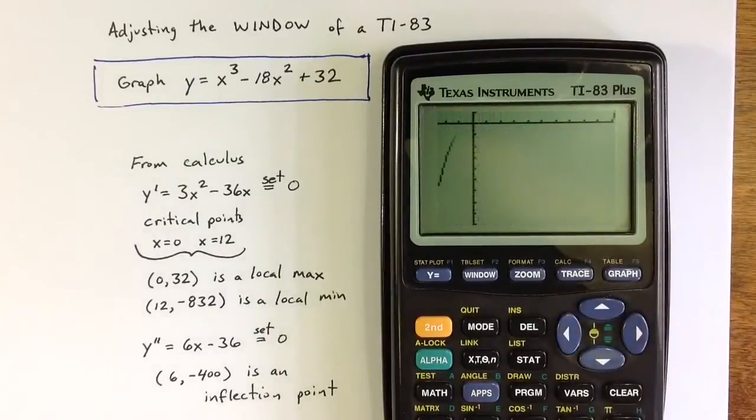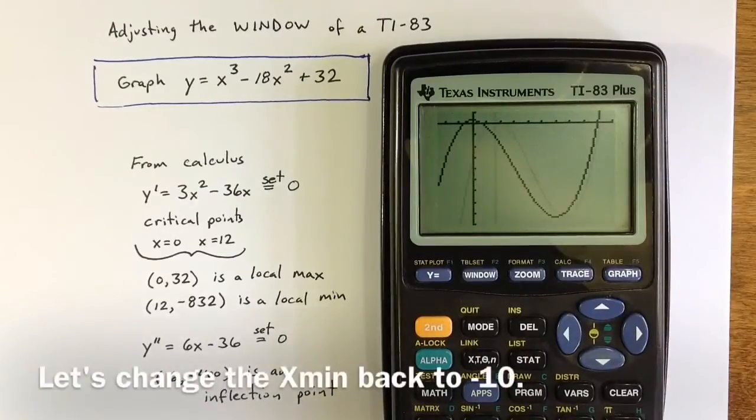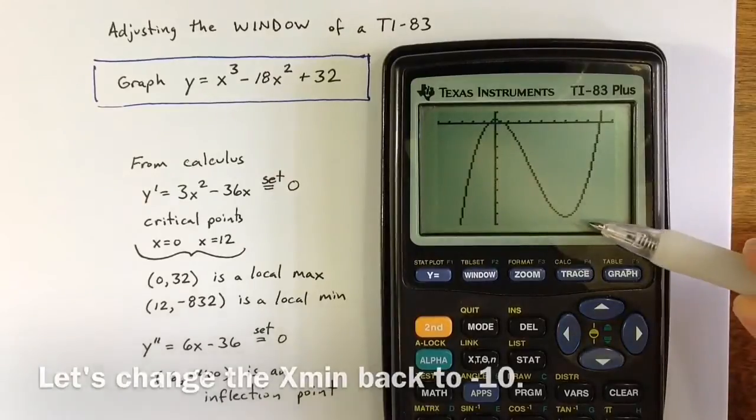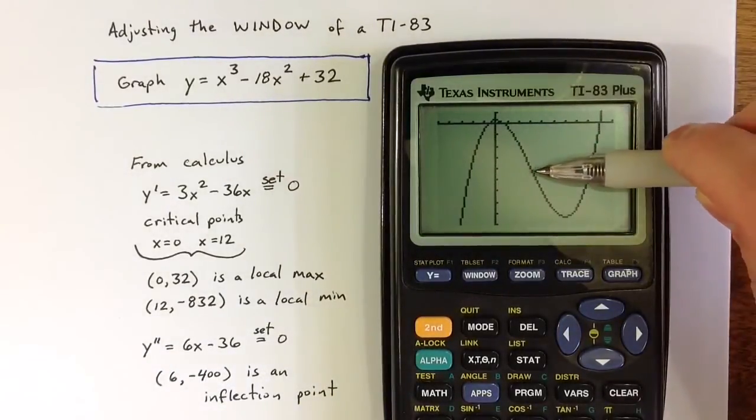And now when I hit the graph, I can see the entire graph. And we can at least see those minimum and maximum points, those extreme points, and also the inflection point in the middle.